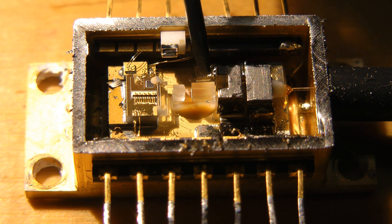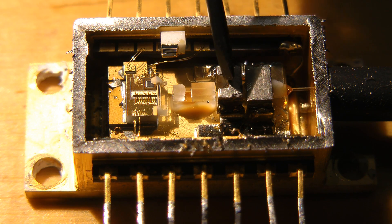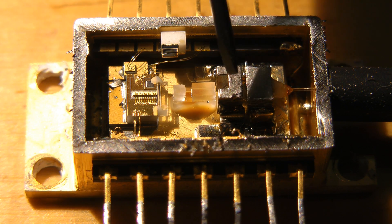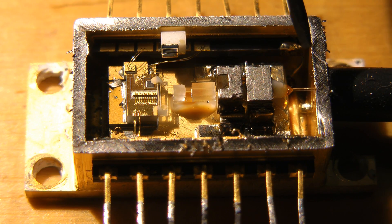This element is the actual volume Bragg grating, I'll go into that later, and on the output here we have a lens that focuses the collimated beam coming out of this down into the fiber for output.